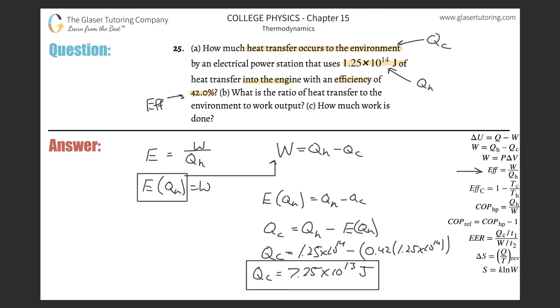Letter b says what is the ratio of heat transfer to the environment to work output? We can take this ratio: heat transfer to the environment to the work output. They're asking us for Q sub c over work w. Now I need to solve this ratio. I know Q sub c I just solved for it, but I don't know the work. But I do know that the work is equal to this, as we used that formula before, so I can simply take that and plug it in for work.